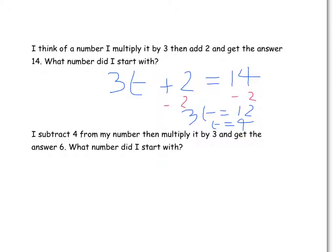So we formed an equation and used that to solve to find out what our original number was. Let's look at one final example. I subtract 4 from my number, then multiply it by 3, and get the answer 6. What did I start with? So the first thing we're told is we're told we subtract 4 from our number. So our number, let's call it d this time. And we subtract 4 from it, and then we multiply it by 3. So we're multiplying all of what we've got already by 3. And to do that, we need to put brackets around both sides.